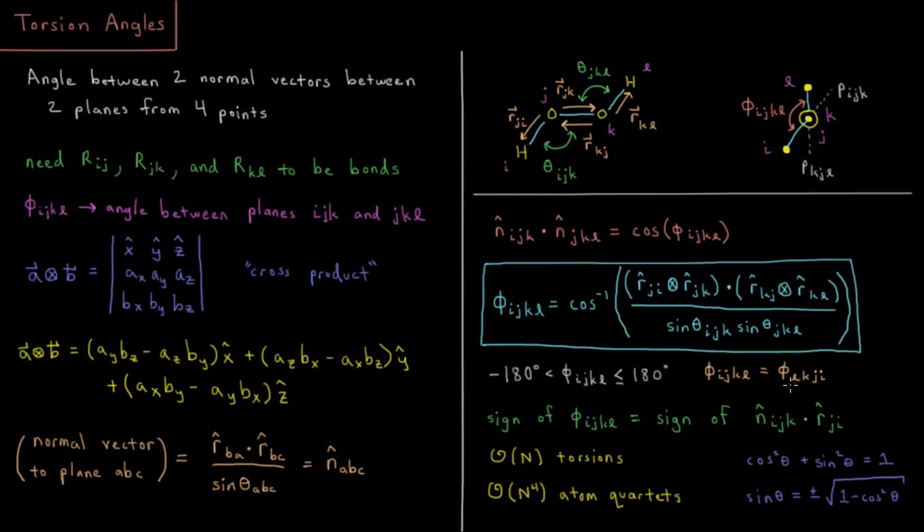Additionally, we have the symmetry that if you reverse the indices, so torsion angle L, K, J, I is equal to torsion angle I, J, K, L. So no matter which one you start with and end with, as long as it's the same sequence of atoms, you're going to get the same torsion angle as a result.